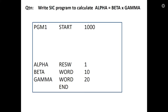Alpha is the result, so alpha is RESW 1. RESW is reserve word — an integer array declaration of size 1 to store the result. Beta is WORD 10, meaning beta equals 10. Gamma is WORD 20, meaning gamma equals 20. 10 and 20 are two integer constants.